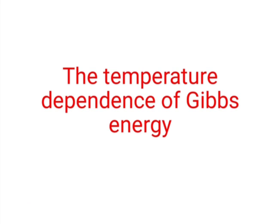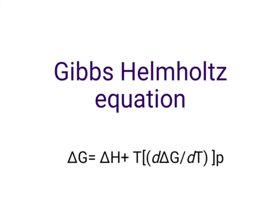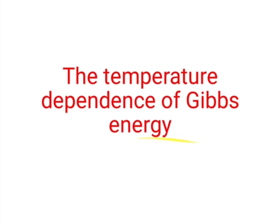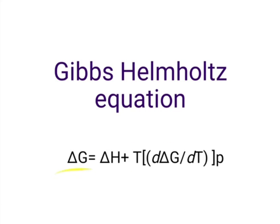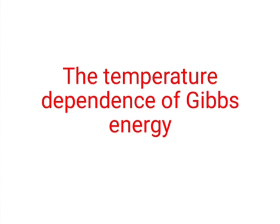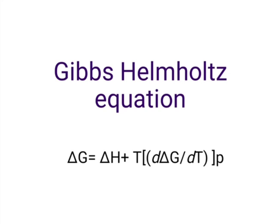Briefly, the temperature dependence of Gibbs free energy was explained in lecture 27, the previous video titled 'Gibbs-Helmholtz Equation.' The equation is: delta G = delta H + T·(∂(delta G)/∂T) at constant pressure, where ∂(delta G)/∂T is the temperature coefficient. This equation shows the temperature dependence of Gibbs free energy. For details, refer to the previous video on the Gibbs-Helmholtz equation.